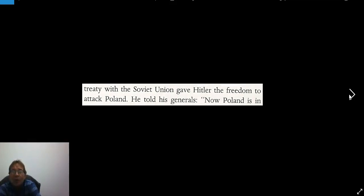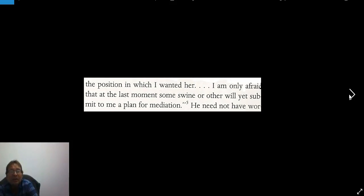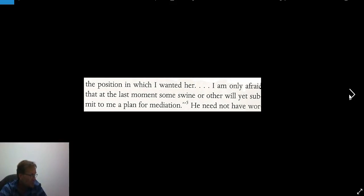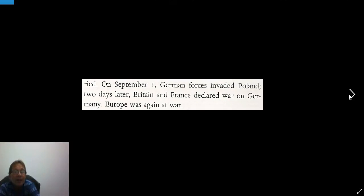The treaty with the Soviet Union gave Hitler the freedom to attack Poland. He told his generals: 'Now Poland is in the position in which I wanted her. I am only afraid that at the last moment some sign or other will yet submit to me a plan for mediation.' — from Documents on German Foreign Policy, Series D, Volume 7, London, 1956, page 204. He need not have worried. On September 1, German forces invaded Poland, and two days later Britain and France declared war on Germany, and Europe was at war again. That is the immediate cause: the invasion of Poland, 1 September 1939.